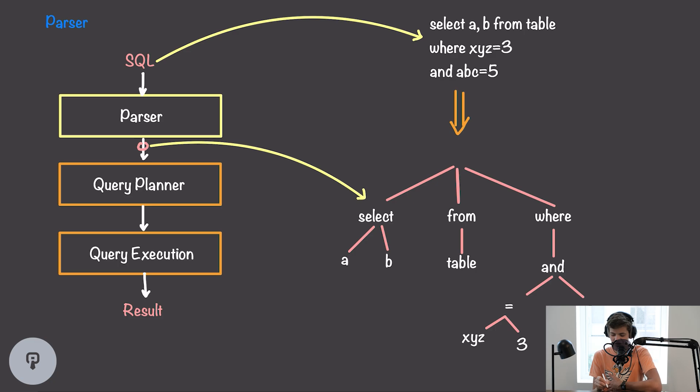The input to the parser is just the SQL statement. So let's say we have select AB from table, where XYZ equals three and ABC equals five. It's hard for the database to operate on this raw text here, so we want to put it into some sort of data structure that is easier for our database to use. We're going to use a tree for this, and it's going to look something like this. So our base query consists of a select, a from, and a where clause, and our select contains these two expressions, A and B.